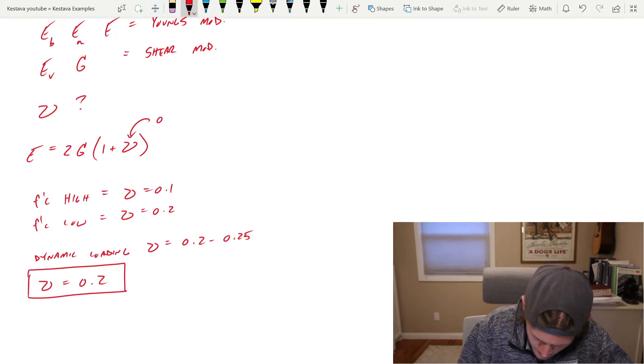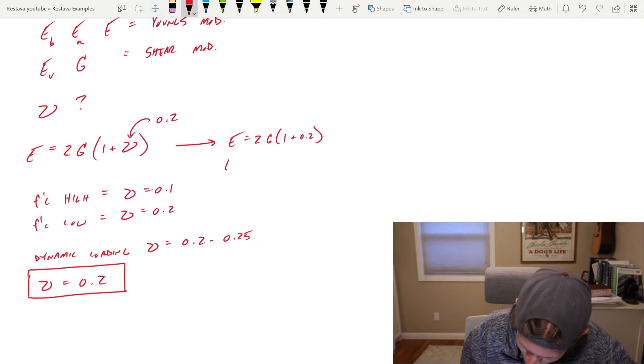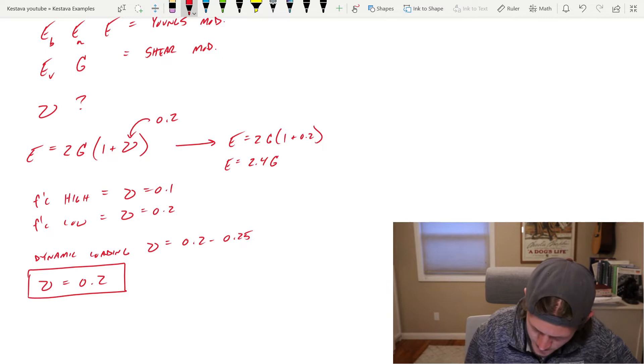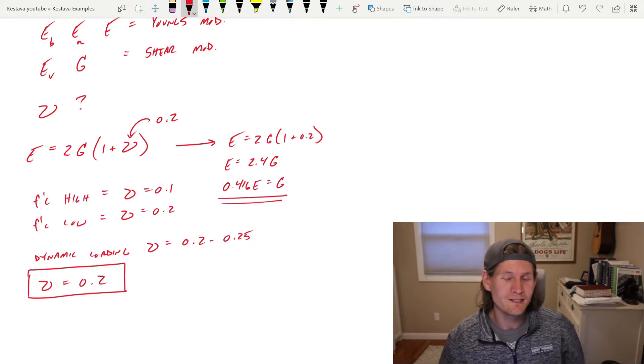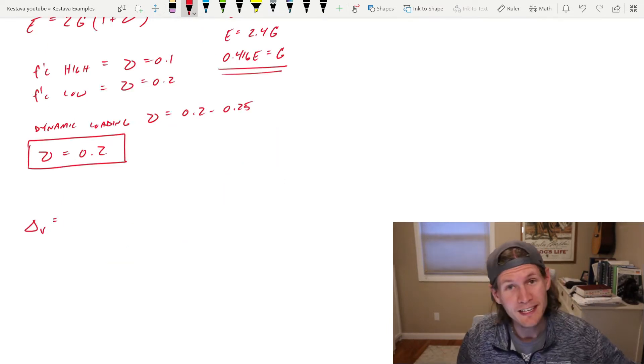Now that means we get to plug that in there. That boils down to E equals 2.4 G. Or, if you bring that to the other side and solve in terms of G, 0.416 E equals G. So now we have everything that we need. So let's plug it all into the equation. Delta V equals the following.